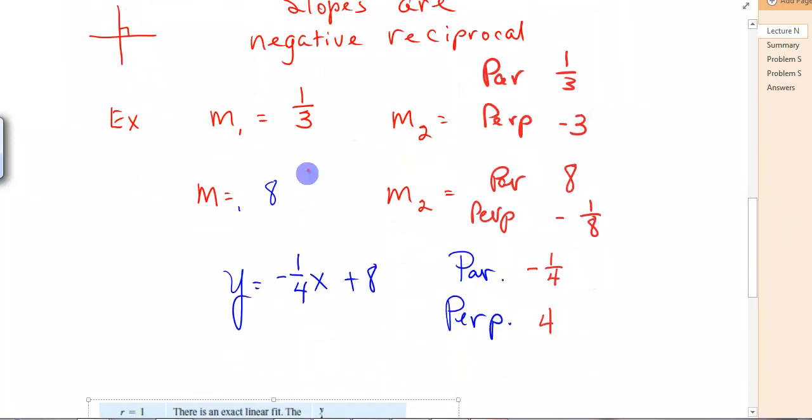If you're given a slope of eight, parallel to that would be eight, perpendicular, flip it, eight over one becomes one over eight, and change the sign. Same thing here, y equals negative one-fourth x plus eight. Parallel line to that would have a slope of negative one-fourth, which is the same. Perpendicular, flip that, you get four over one, make it positive.